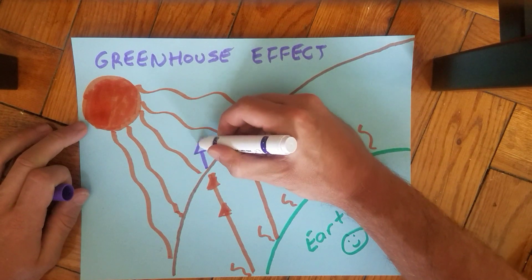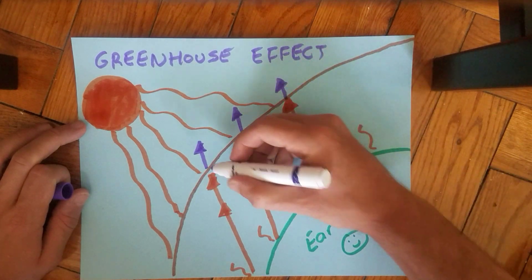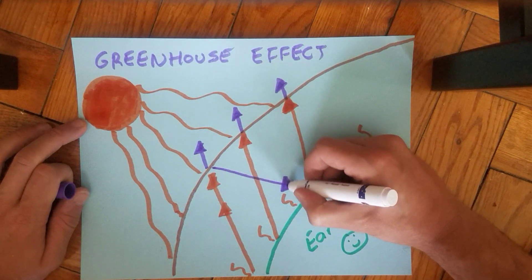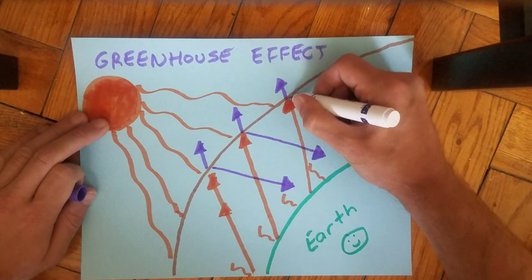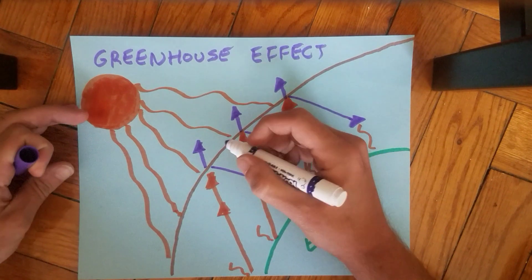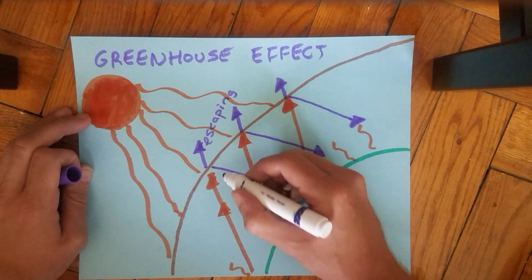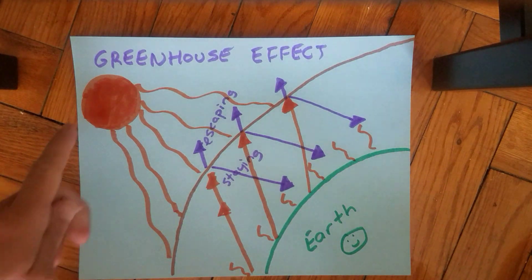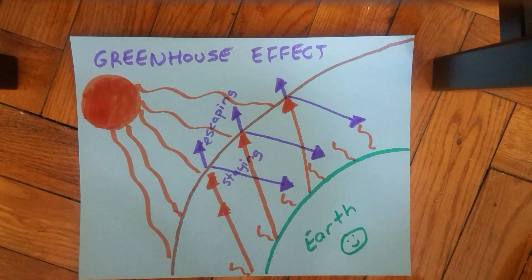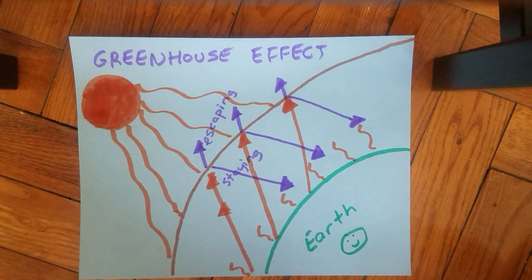Much of it will escape the atmosphere again and get lost into space, but much won't — much will come back. And remember, this whole time the sun is still sending heat and light towards the surface of our planet. So some radiation is escaping, and some is staying. There's always a consistent amount of heat that stays as a result.